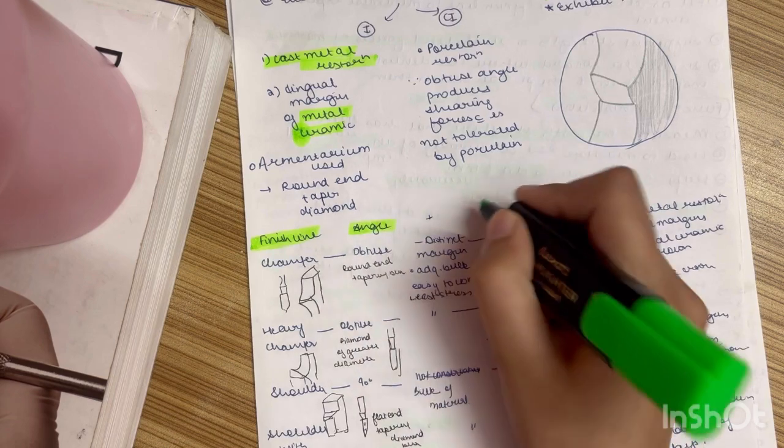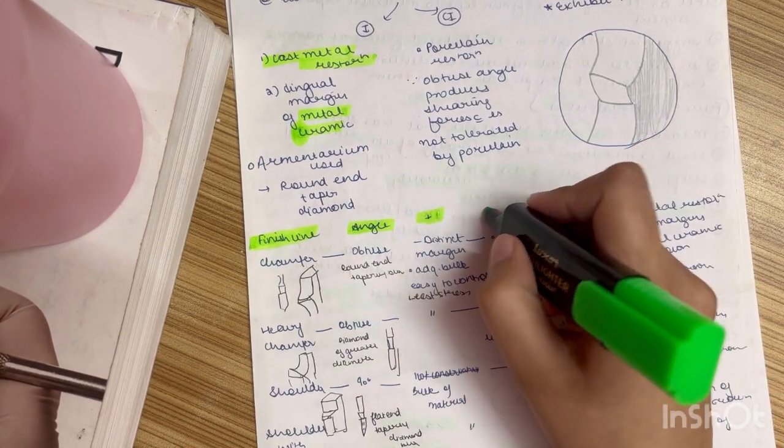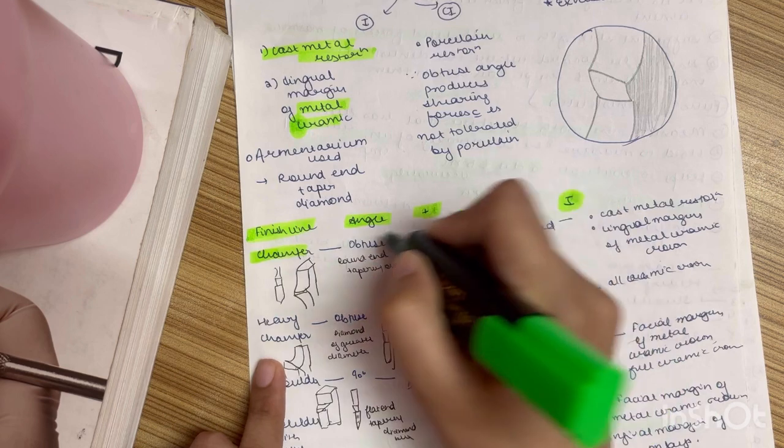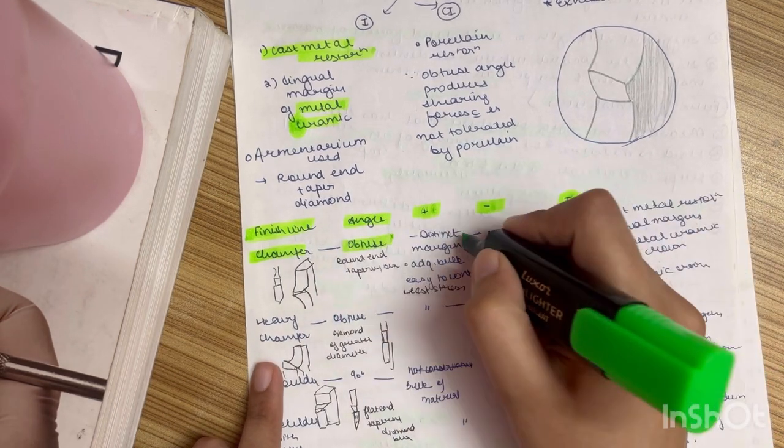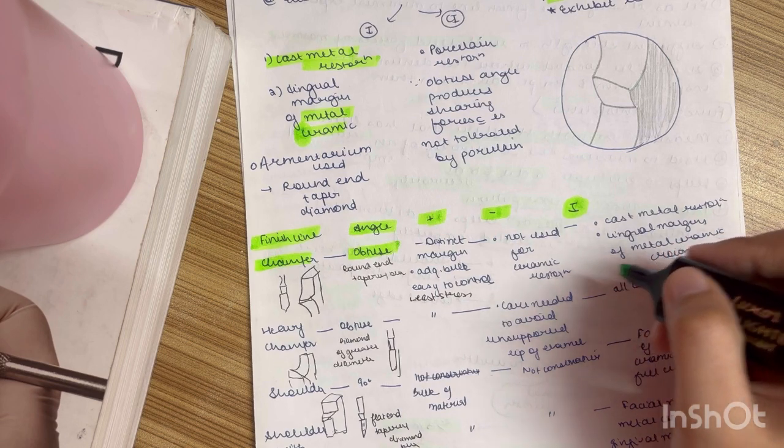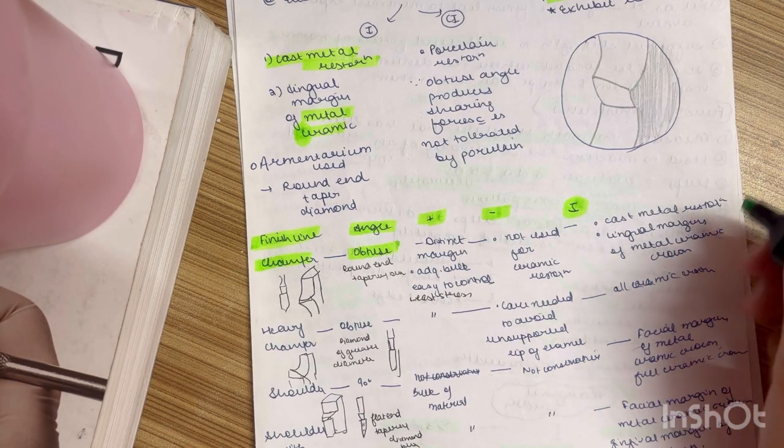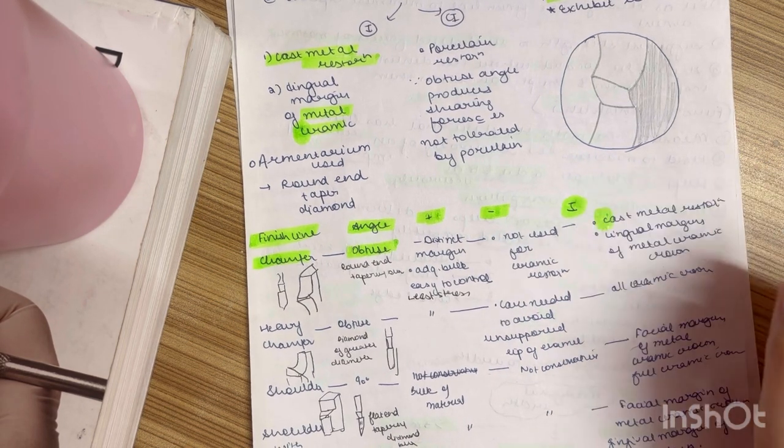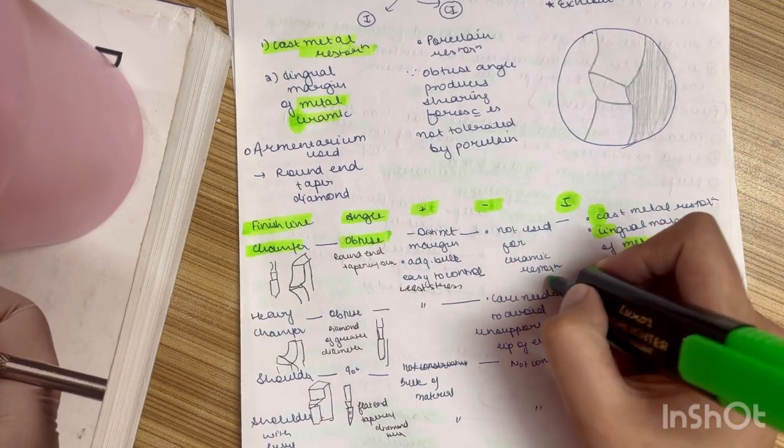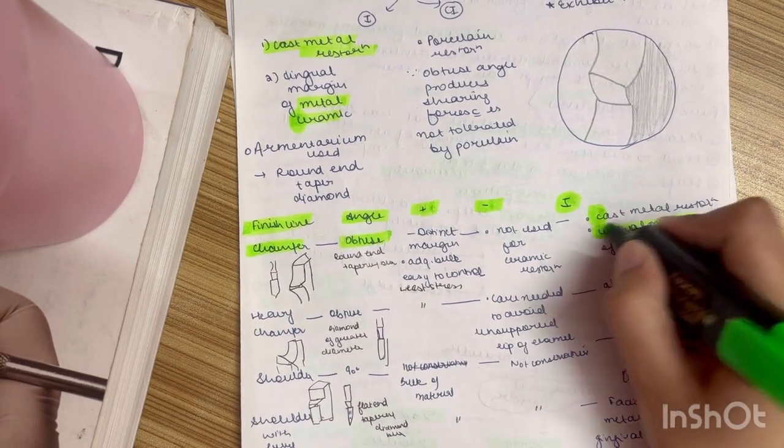First make a chart. Name of the finish line, angle, advantages, disadvantages, indications. So chamfer I told you it is obtuse. Then distinct margin, adequate bulk and easy to control, least stress. Then we see that it is used for cast metal restoration and the lingual margin of the metal ceramic crown. Not for ceramic restoration. Only lingual margin.